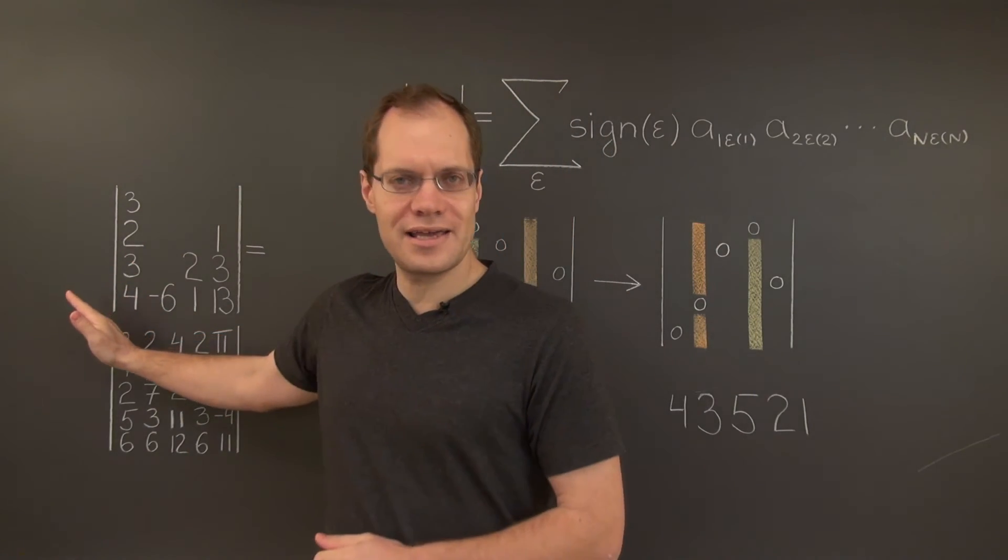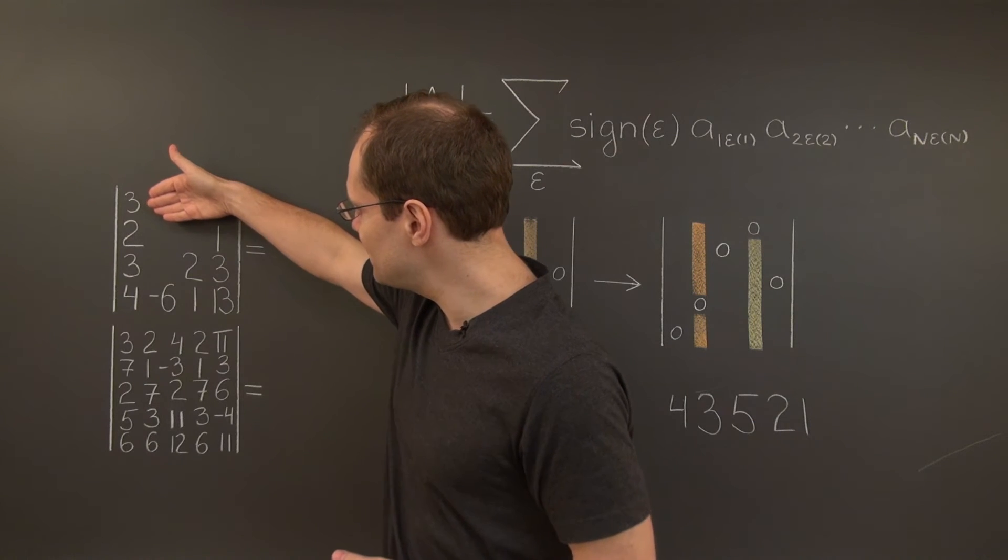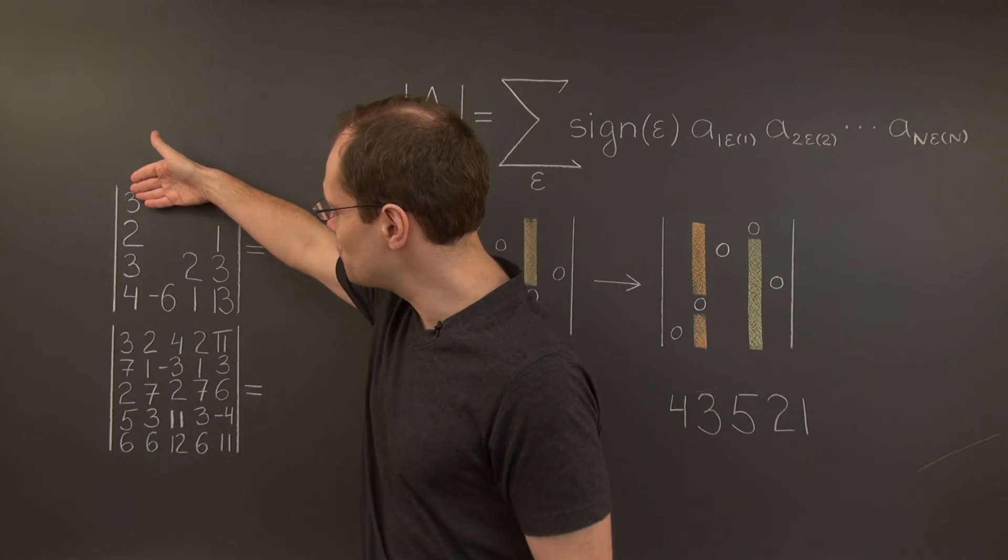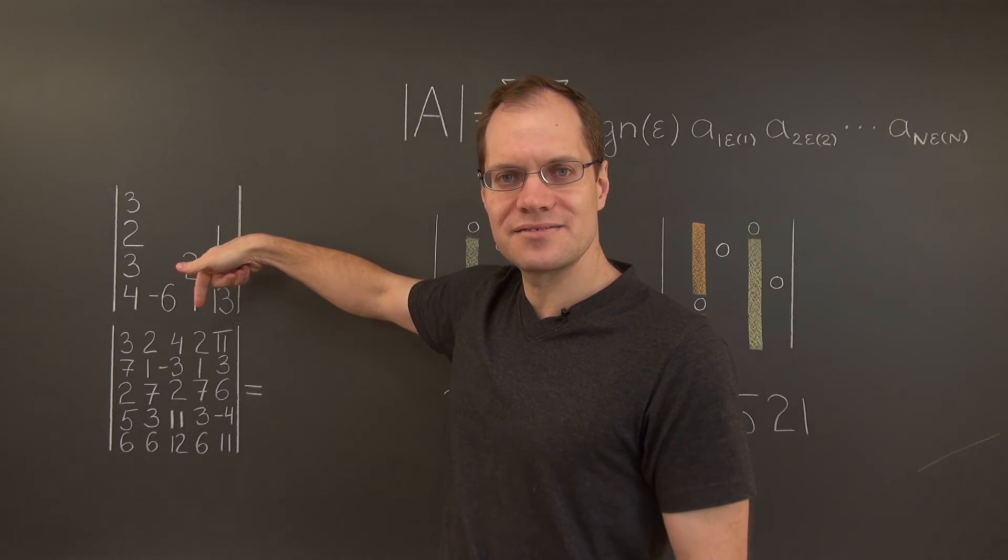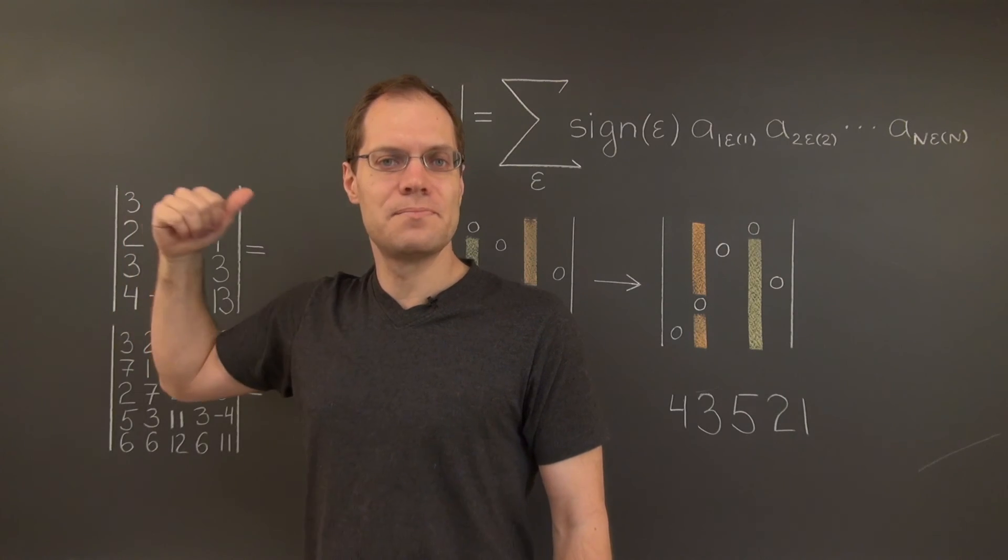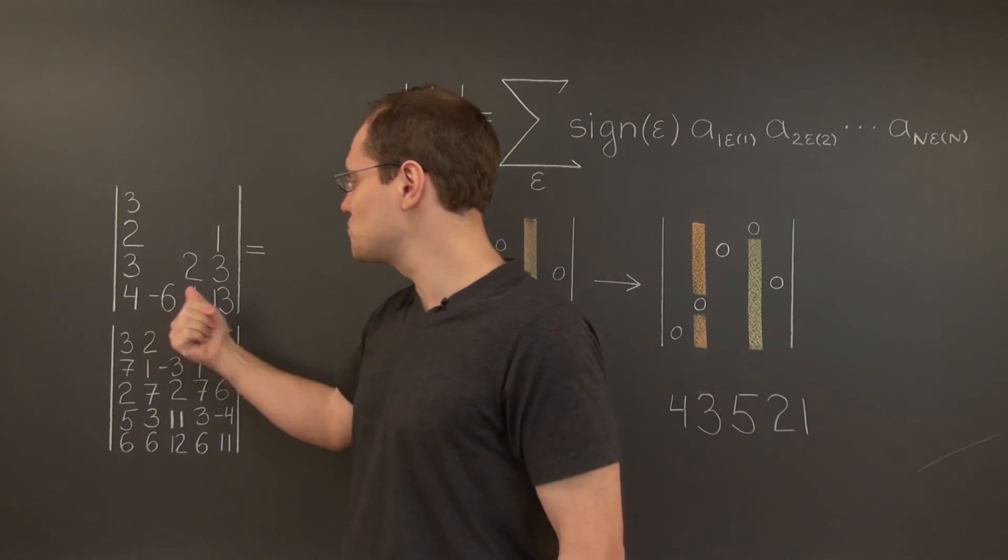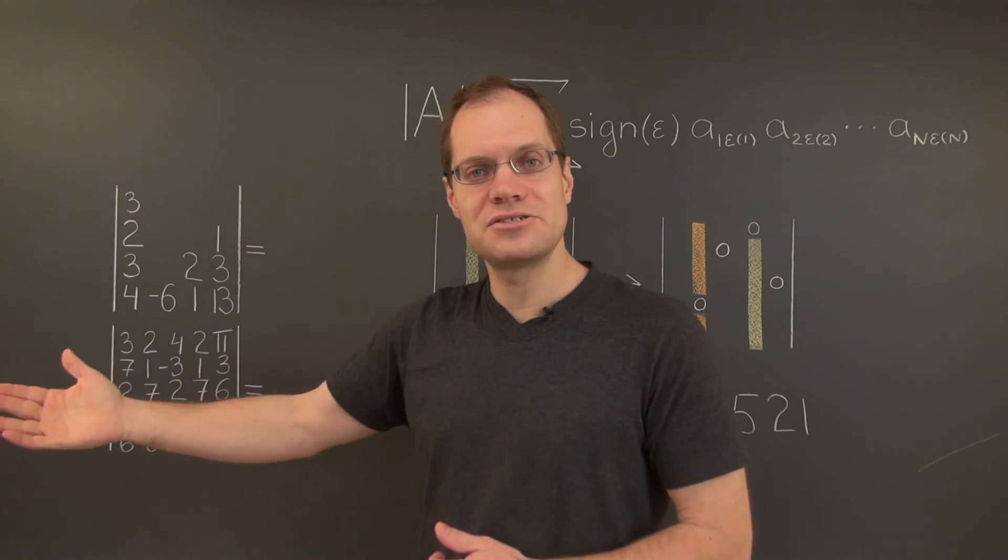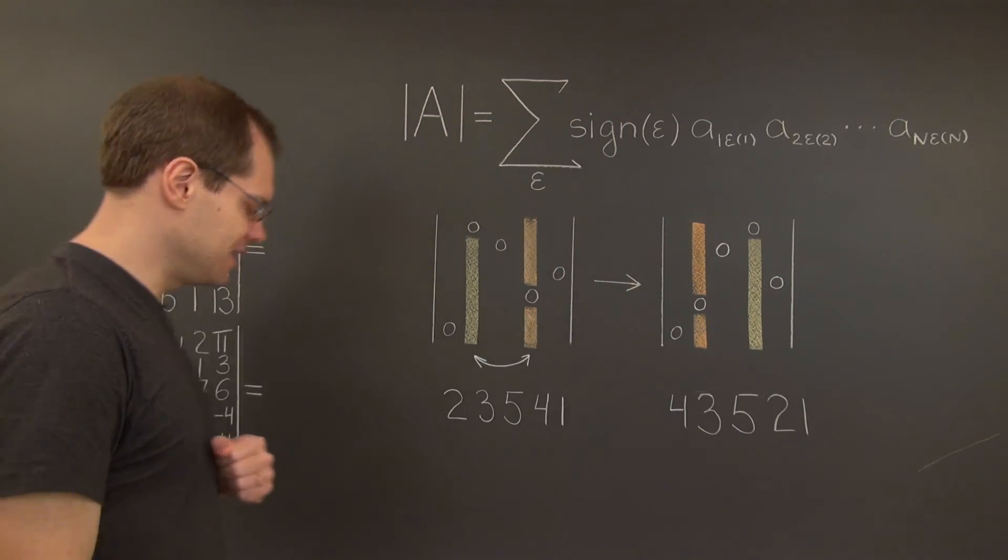which was lower triangular. And therefore, its determinant was the product of the diagonal entries, which were 3, 1, 2 and minus 6. Therefore the determinant of that matrix was minus 36. And this matrix being one switch away from the original matrix has determinant minus minus 36 or 36.